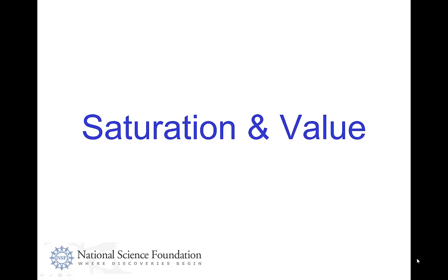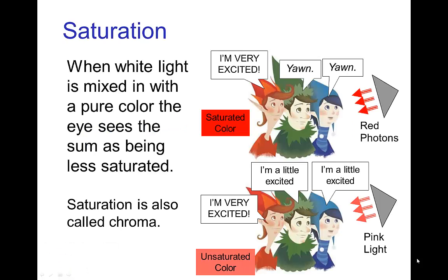Saturation and value. The saturation of a color indicates the amount of white light that's mixed in with a pure color. If there's very little white mixed in, then it's a saturated color, but if there's quite a bit of white mixed into the spectrum, then it is an unsaturated or desaturated color.